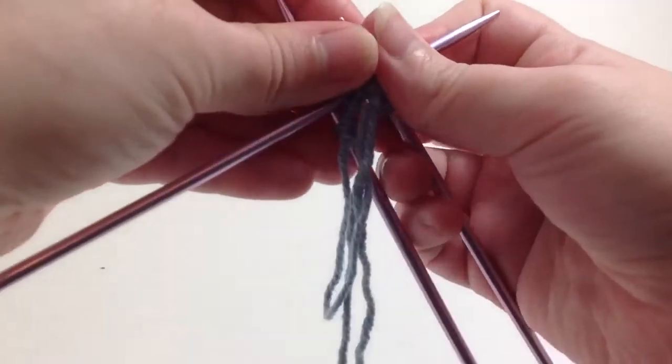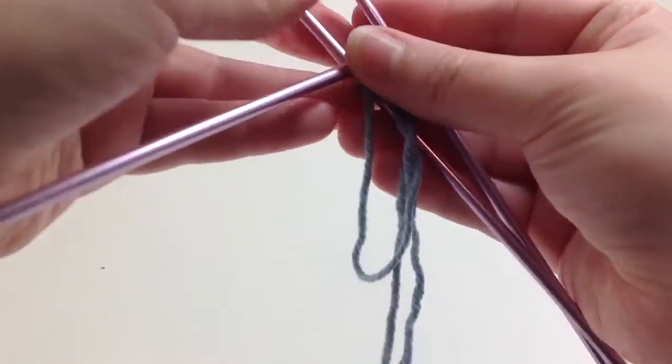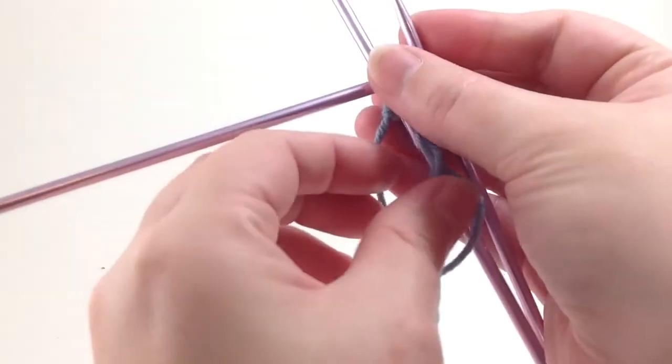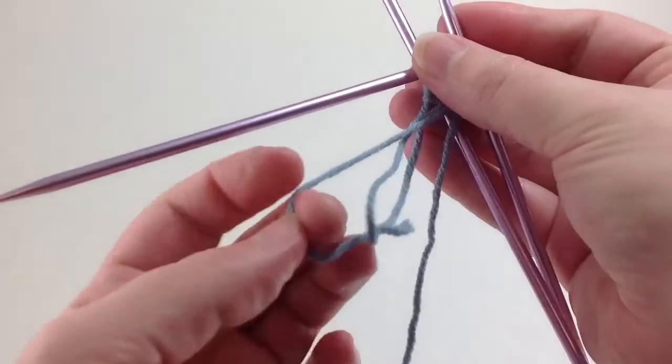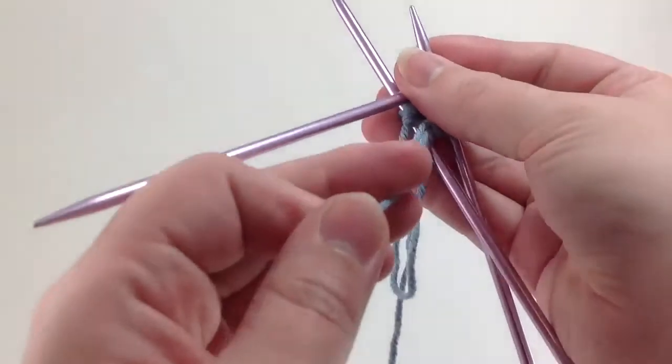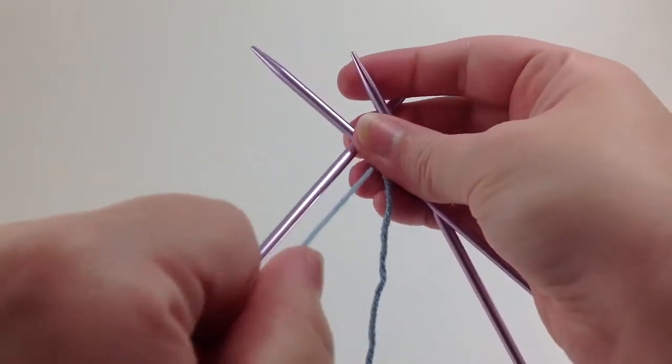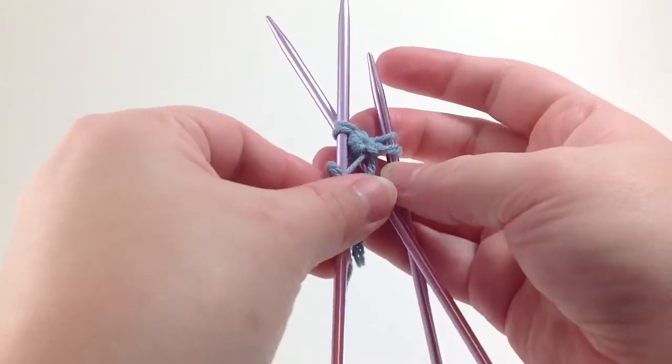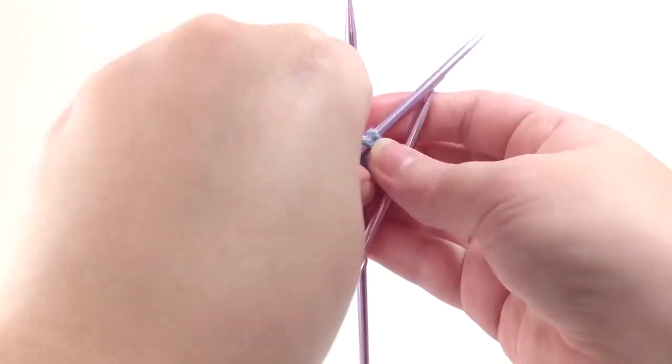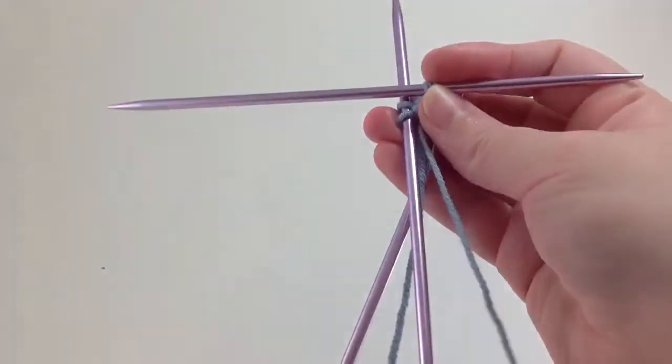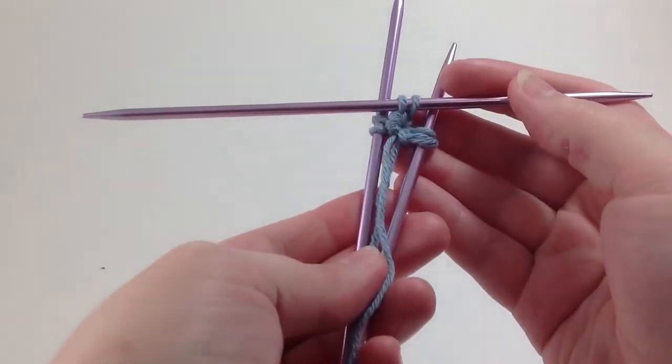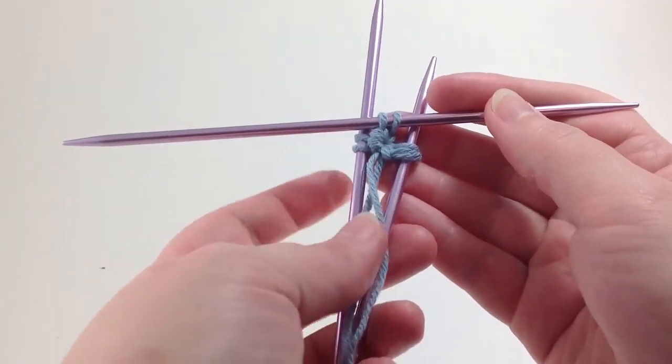And the nice thing about this method is I can just grab that yarn end and pull it. And it'll tighten up the center so I'll have a nice clean start to the fabric. And then I'll just start my knitting project as I would with any other cast-on method.